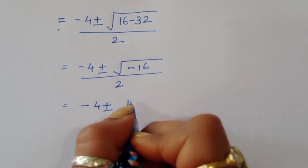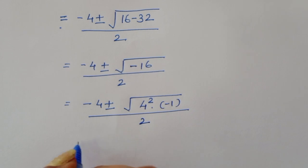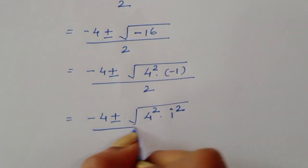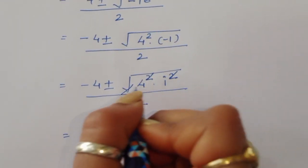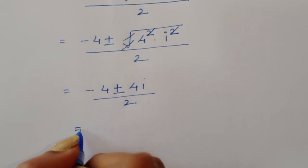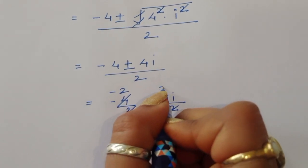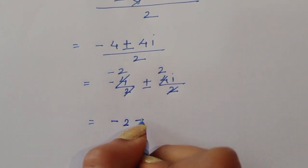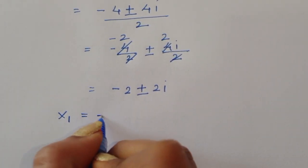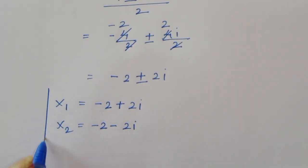This gives x = [−4 ± √(−16)] / 2. We can write −16 as 4² × (−1), and since √(−1) = i, this becomes [−4 ± 4i] / 2 = −2 ± 2i. So x₁ = −2 + 2i and x₂ = −2 − 2i.